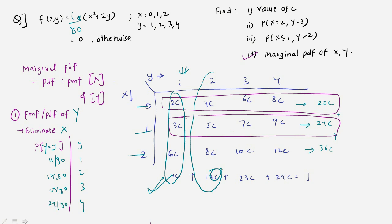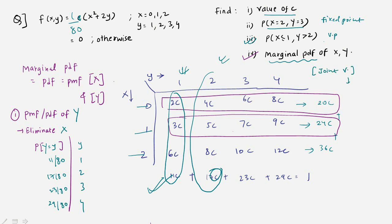So that completes the fourth part. We covered how to find the value of c, the probability at a fixed point, the probability over a variable range, and the marginal PDFs by separating from the joint variable to individual variables.